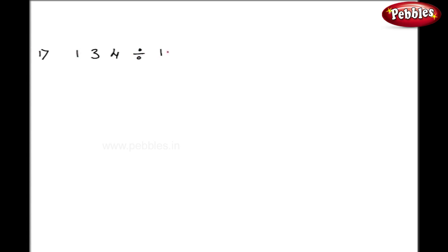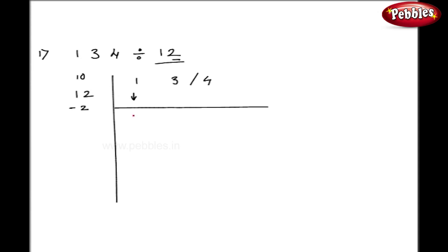Let us see now the case where a divisor is greater than the base. Let me take the example 134 divided by 12. Here 12 is greater than my base 10. The procedure is exactly similar. I'll write 12 here; my base is 10, so my difference is minus 2. I'll write 134 and give a stroke here. Take this 1 down. 1 into minus 2 gives minus 2, so the addition is 1. Now 1 into minus 2 is minus 2, and the addition is 2. My procedure is over: quotient is 11 and remainder is 2.